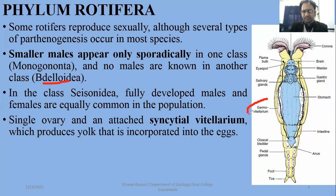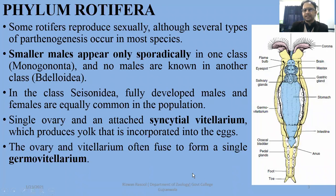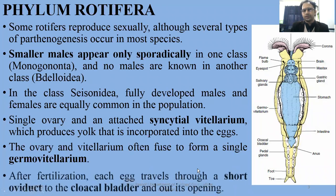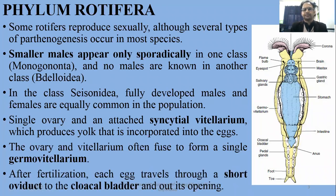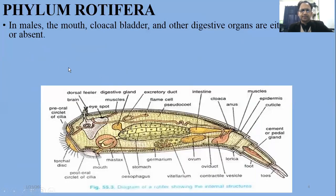The vitellarium is a yolk-secreting structure, while the ovary is an egg-producing structure. The ovary and vitellarium often fuse to form a single germovitellarium. This connects to a cloaca or reduced cloacal bladder, which you can see here, through which eggs are projected out.